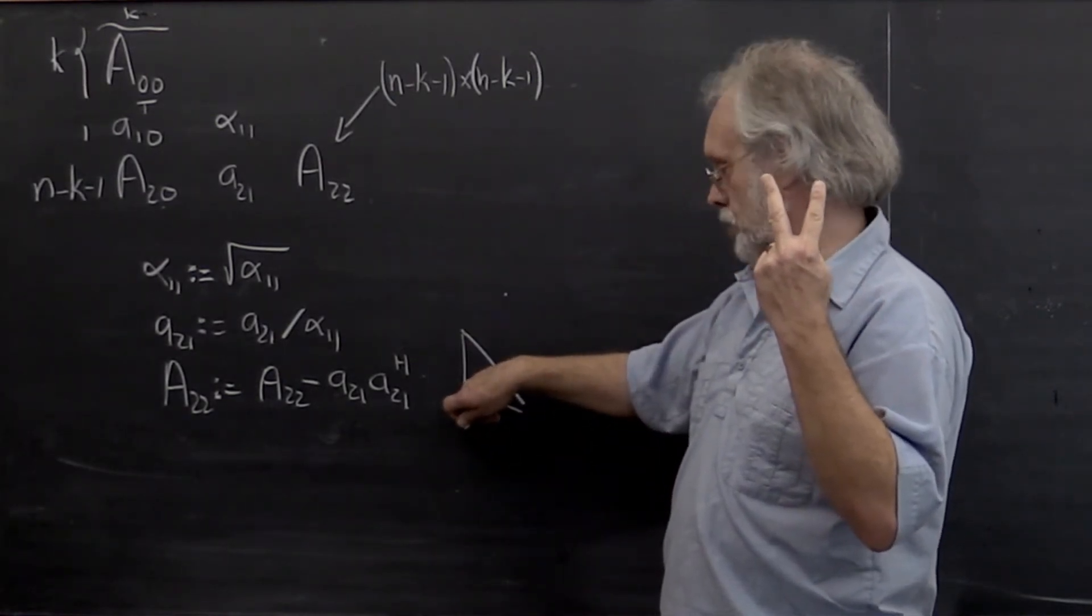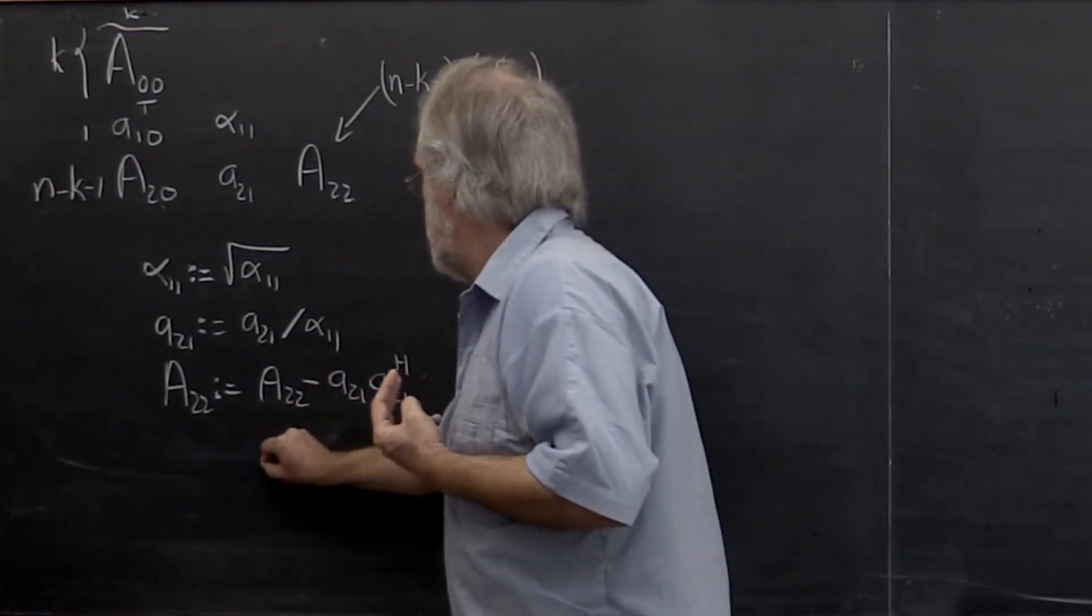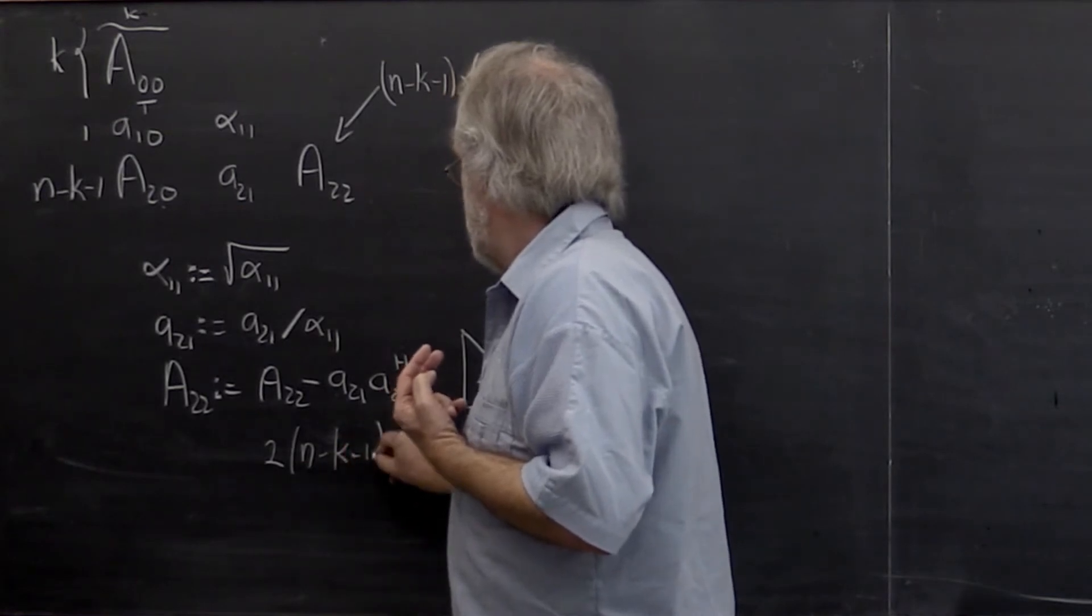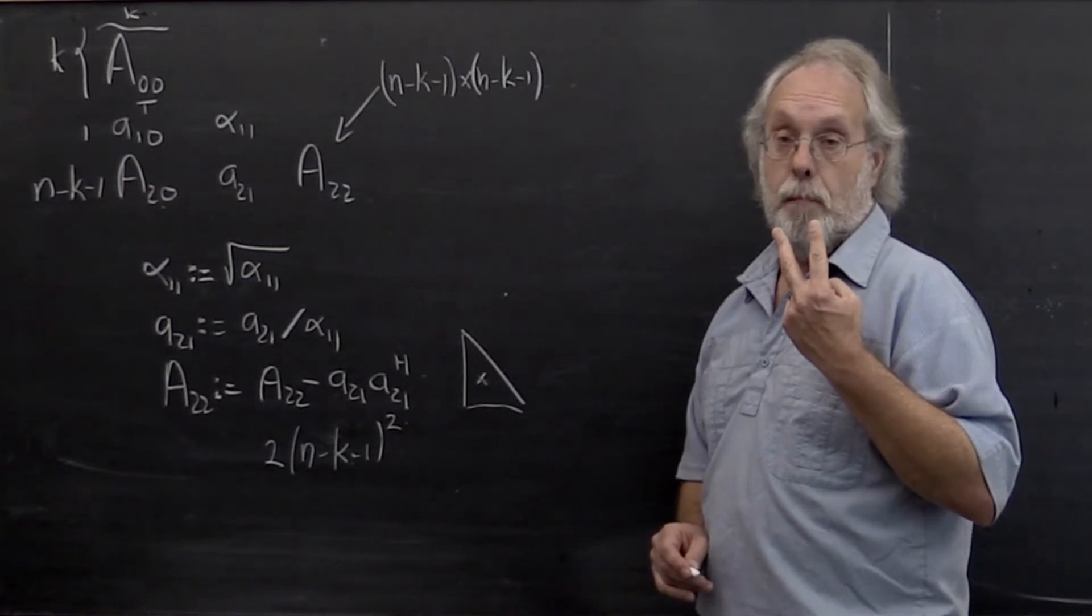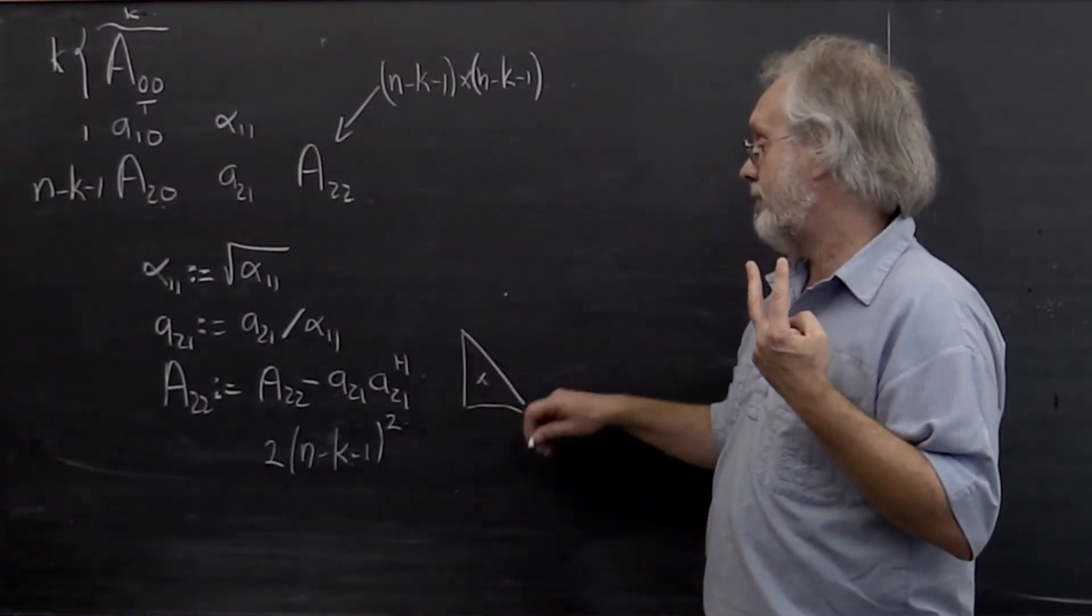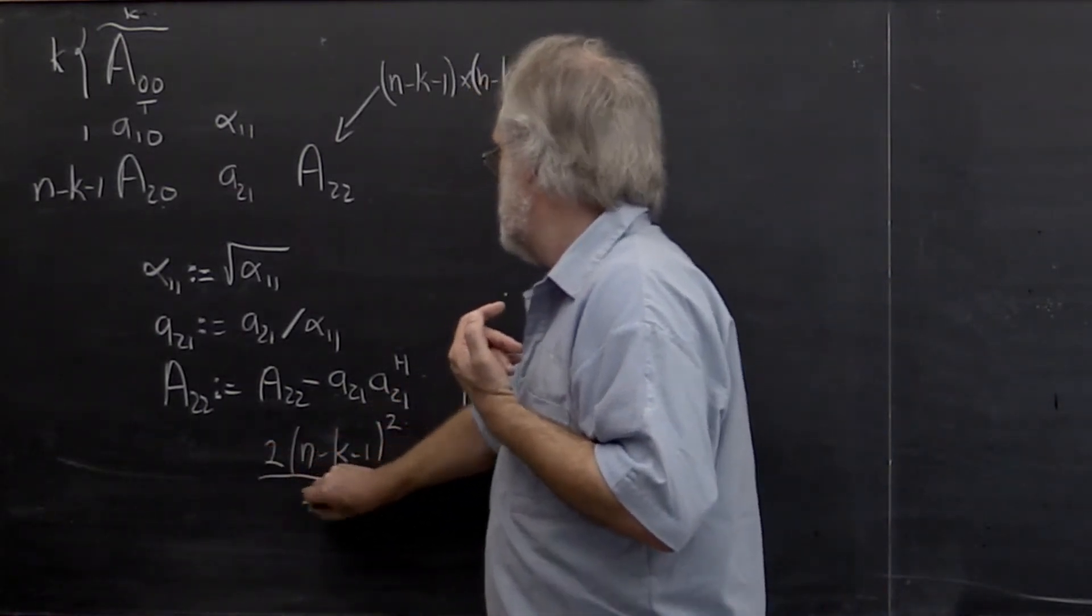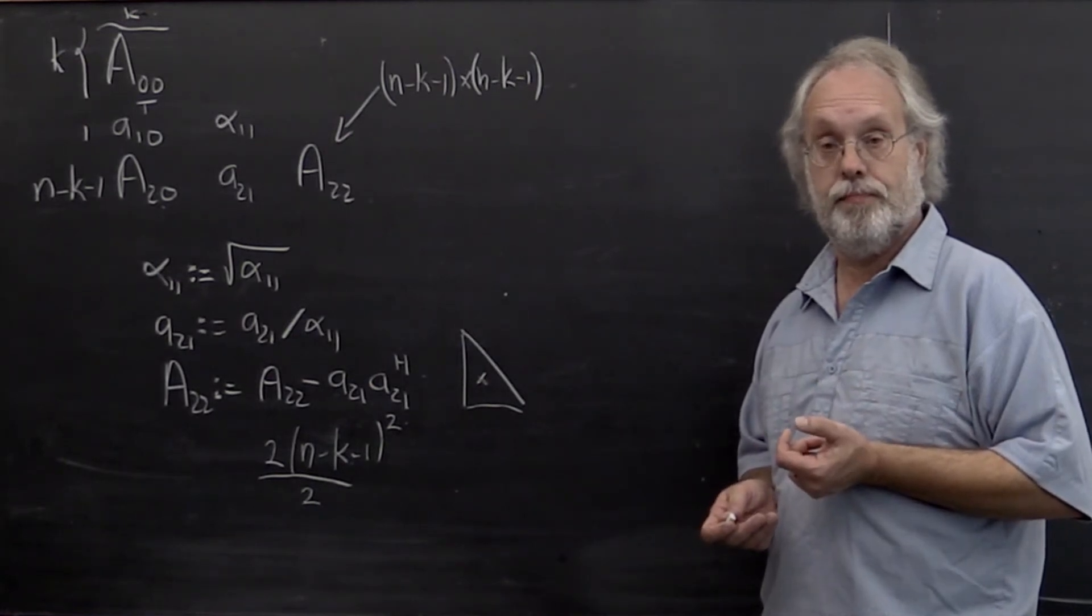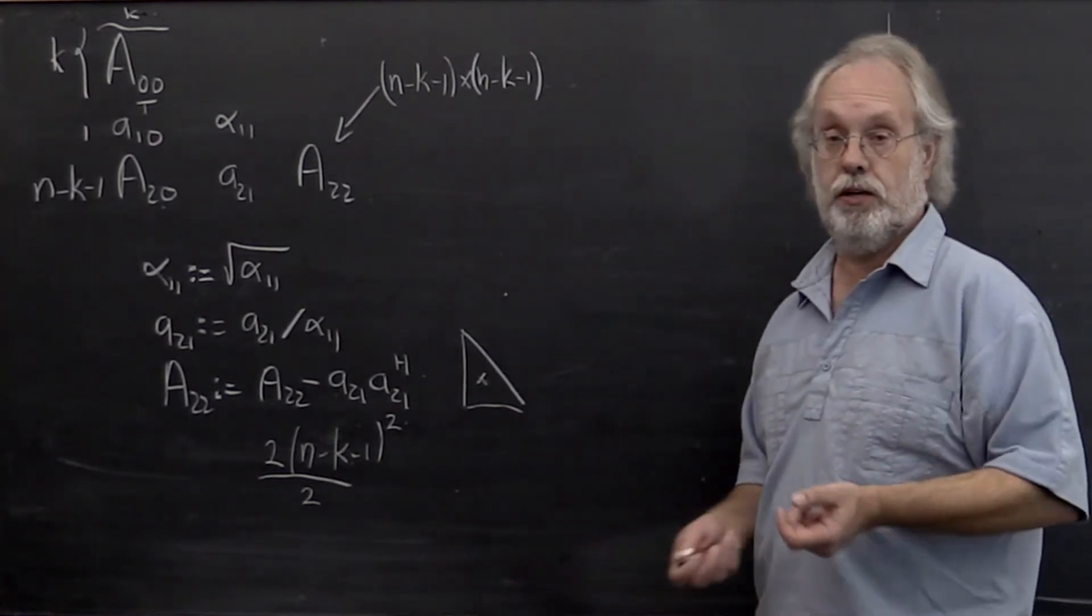So for every entry we do 2. If we were updating the full matrix, that would mean 2 times n minus k minus 1 squared floating-point operations. But because we only have to update half of the matrix, we perform approximately half of those. So this is where the major expense is in a typical iteration.